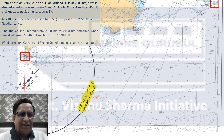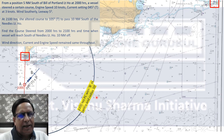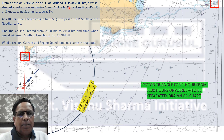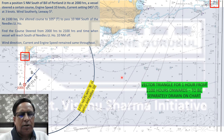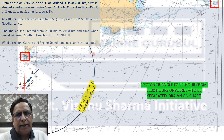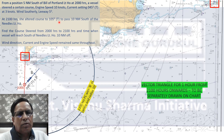We have obtained a position circle for 2100 hours drawn with point B as center and radius 10 miles. From 2100 hours, we know the course steered, engine speed, current, and wind experienced, and the vessel must pass 10 miles south of the Needles Light. We draw a vector triangle for one hour in the chart. First we allow for wind: on a CTS of 105° true with southerly wind leeway of five degrees, that gives an effective course of 100° true.